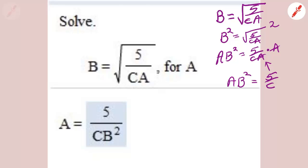Now all that's left for me to do to solve for A is to divide both sides by B squared. I'm going to divide by B squared, which is the same thing as multiplying by 1 over B squared. So the B squares cancel over here, leaving me with A equals 5 over CB squared. And that's the answer.